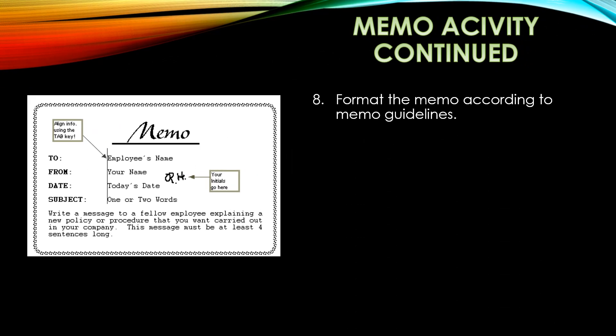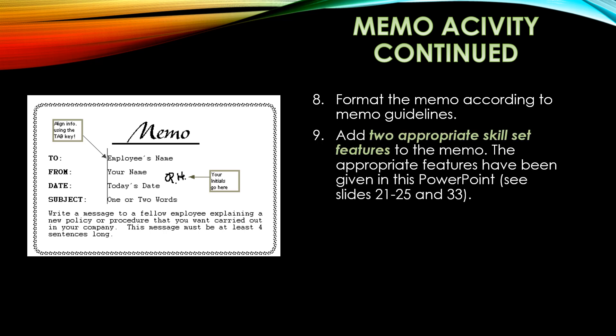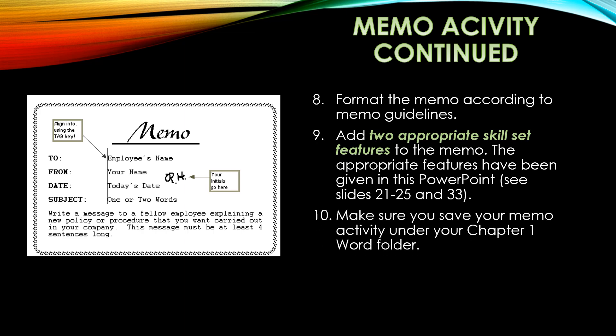Continuing with our memo activity. It is now time to format the memo according to the memo guidelines. Please look at your memo and then compare it to the memo guidelines. You want to make sure that after formatting, your memo looks exactly like the memo guidelines. When you are done formatting the document, add two appropriate skill set features to the memo. The appropriate features for a memo have been given in this PowerPoint — see slides 21 through 25 and slide 33. Make sure you save your memo activity underneath your Chapter 1 Word folder.